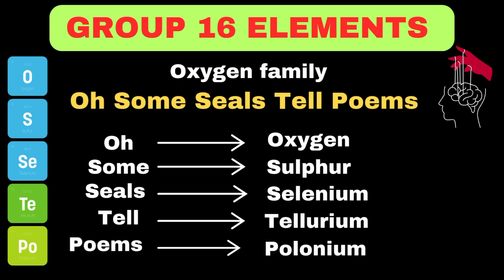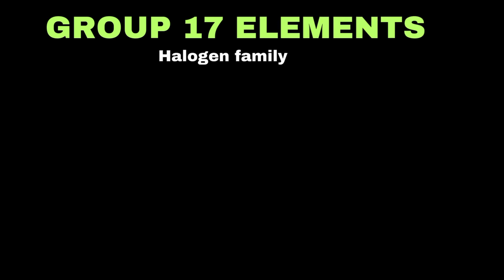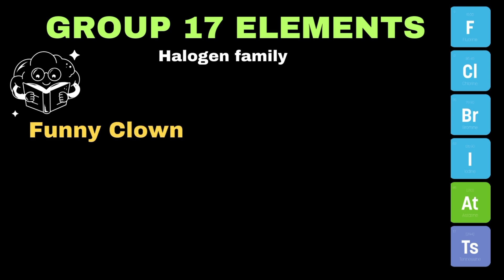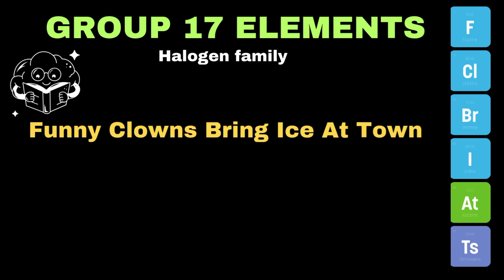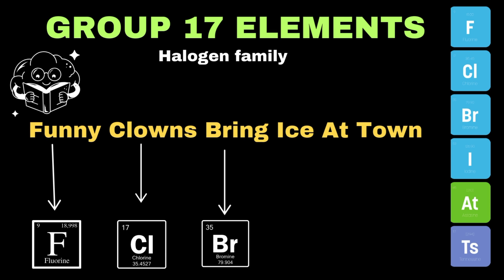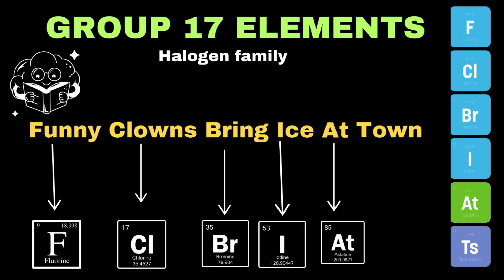Now let's discuss group 17 elements, which are also called the halogen family. The mnemonic is: 'Funny clowns bring ice at town.' Here 'funny' shows fluorine, 'clowns' represents chlorine, 'bring' represents bromine, 'ice' shows iodine, 'at' represents astatine, and 'town' represents tennessine.